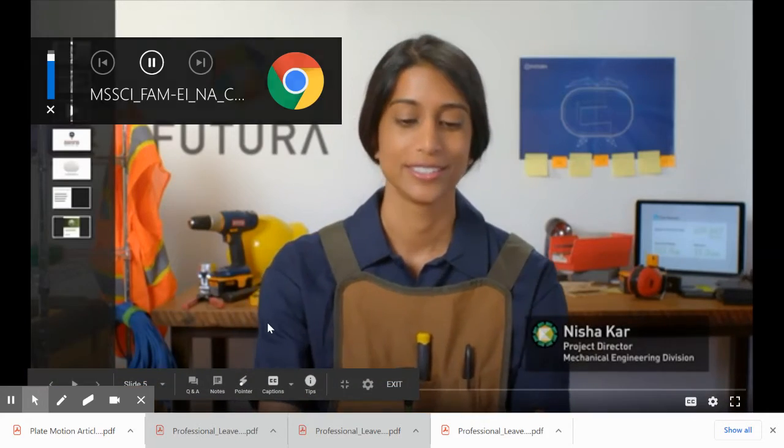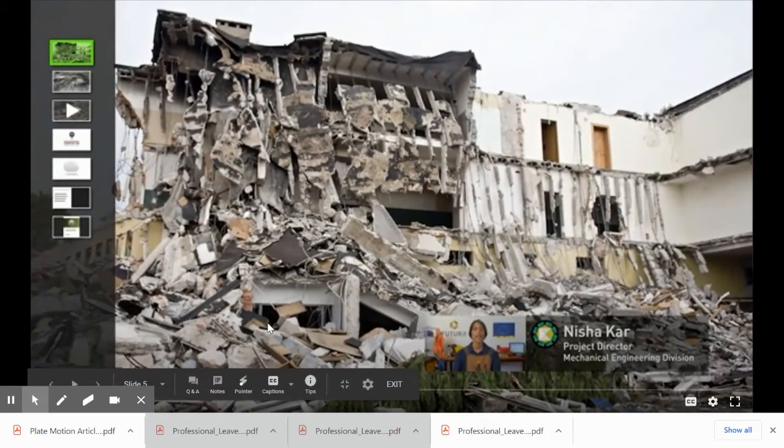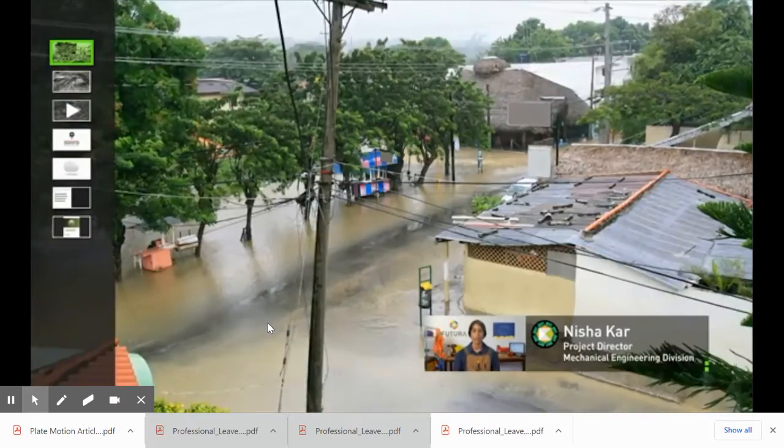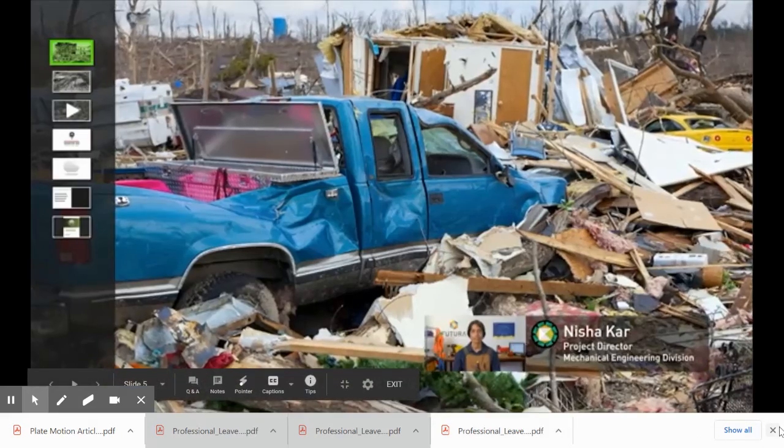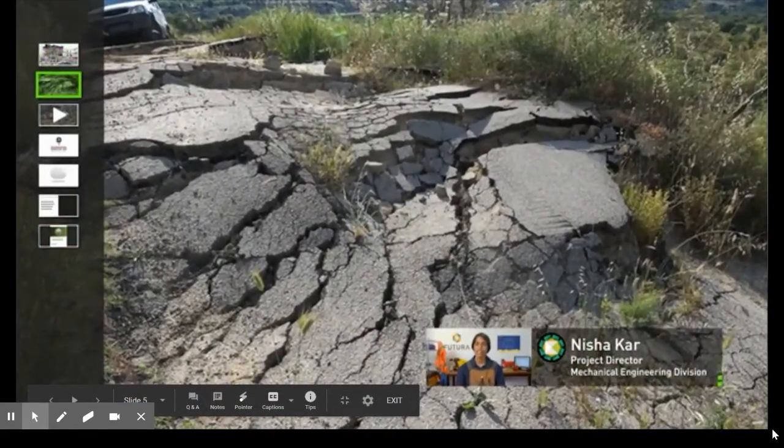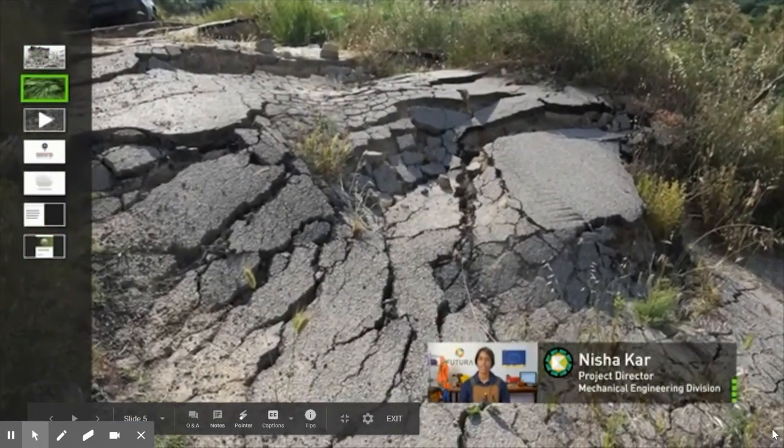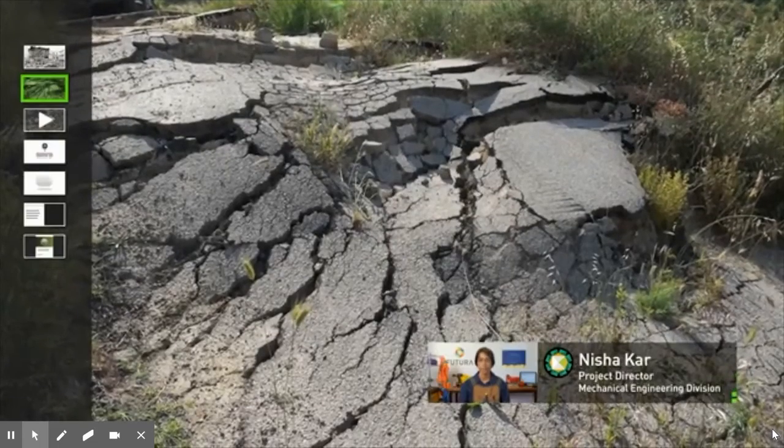After a natural disaster like an earthquake, hurricane, or tornado, it can be really hard to deliver supplies to the survivors. For example, a strong earthquake can shift the ground and trigger landslides that make the roads impossible to drive on. This is even worse when trying to deliver supplies to rural areas that are hard to reach by vehicle to begin with.